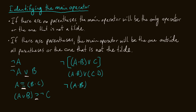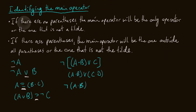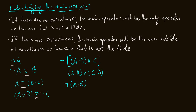Next we have ~(A·B)∨C — the tilde is encompassing everything. Spoiler alert: not is the main operator; it has the entire statement as its scope. That initial definition — the main operator is the operator that has as its scope everything else in the statement — applies here: not has A and B or C in its scope, and it is the only operator outside all parentheses. Then (A·B)∨(C·D): the wedge is the only thing outside all parentheses, so that's our main operator. Finally, ~(A·B): not is outside the parentheses, so not is our main operator.